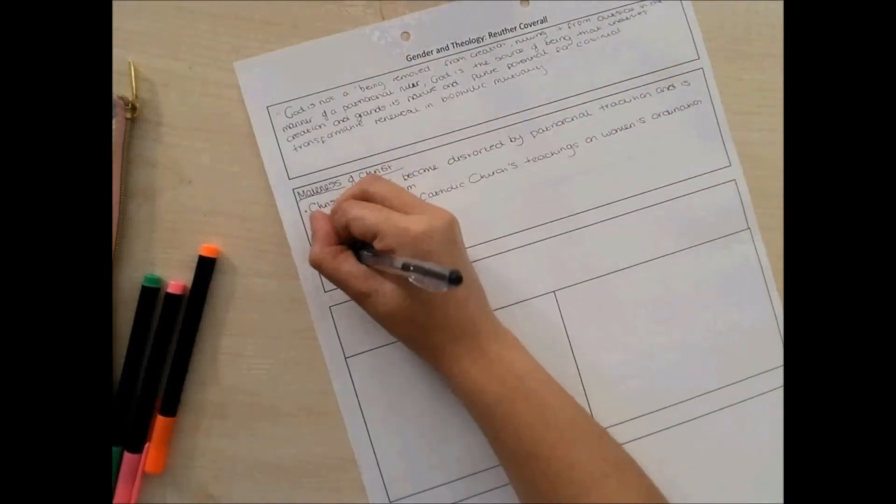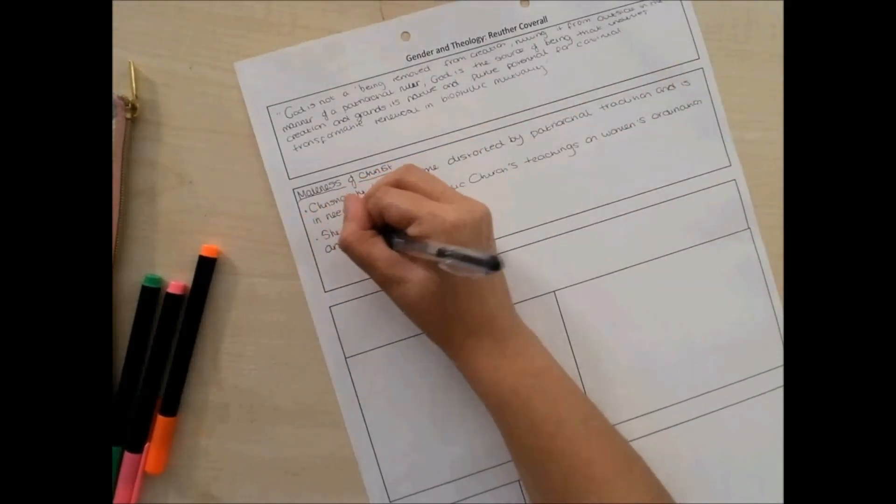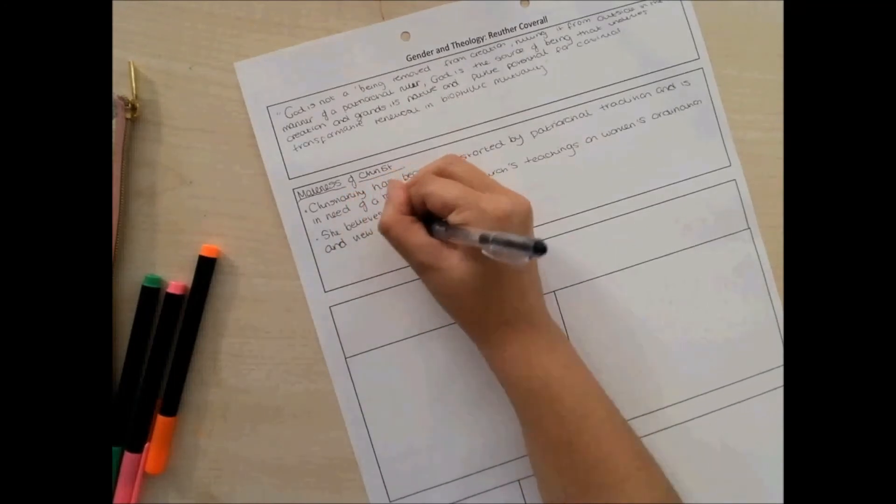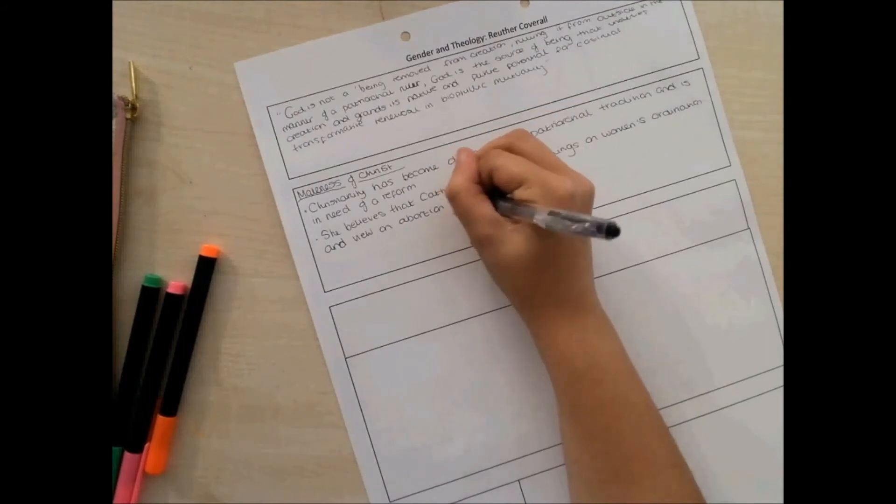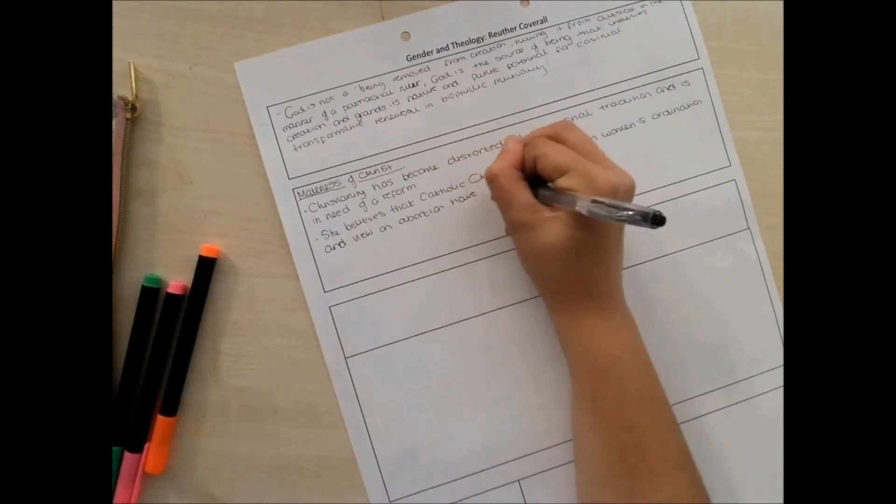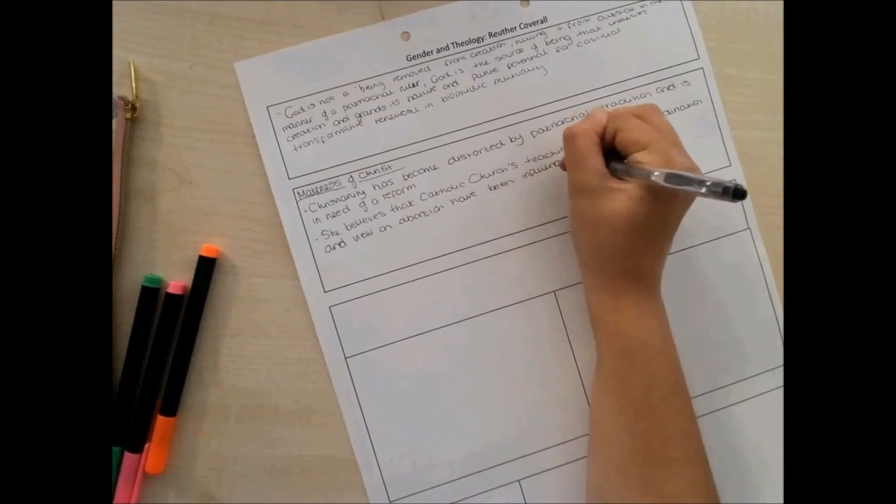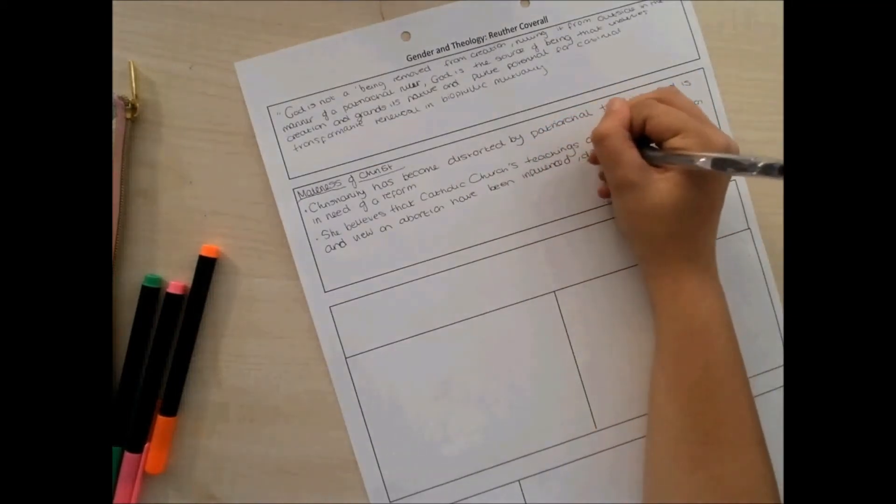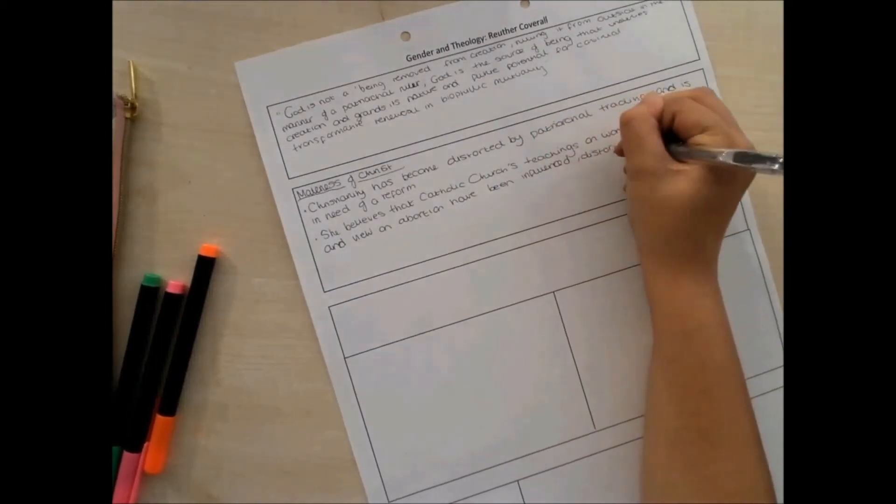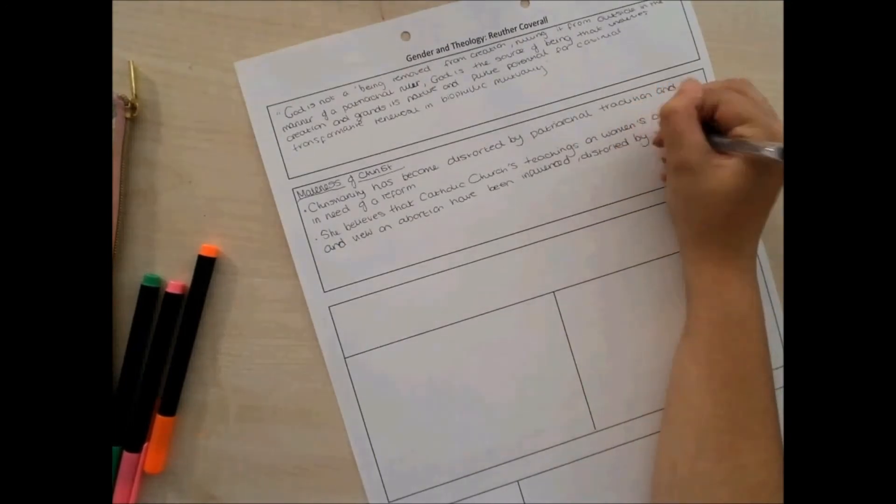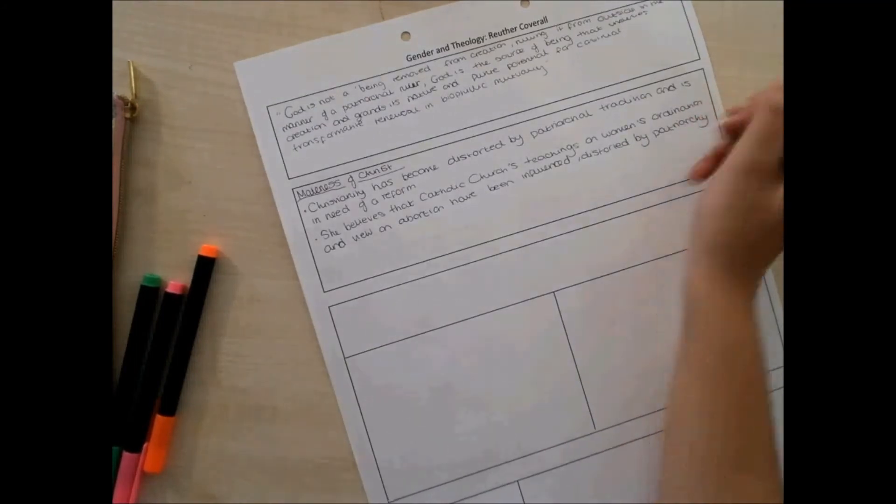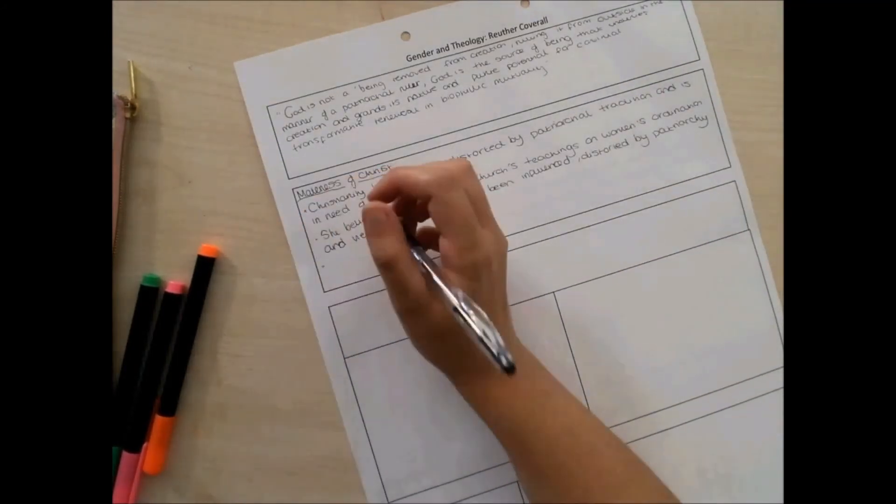So, this is all linking in, the maleness of Christ, this is all linking, this links into the next slide as well. It's all to do with this idea of where has the maleness of Christ come from? So, interesting with this, what she's arguing is, is that the church's teachings on women's ordination, so women being able to move up in the ranks of priesthood, but also views on abortion, have been influenced by this patriarchy.